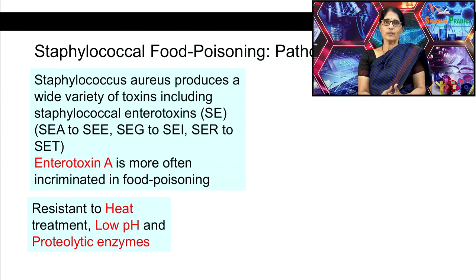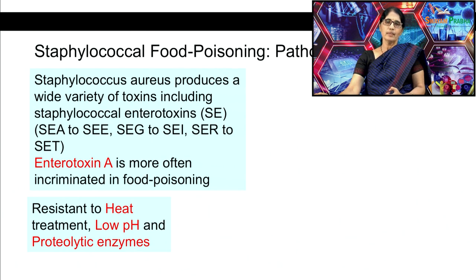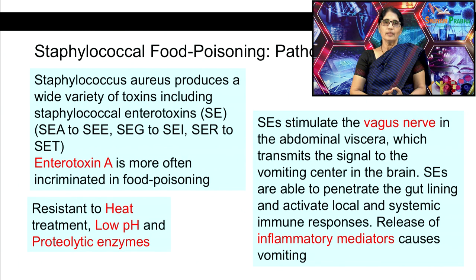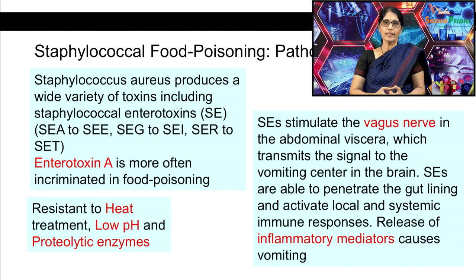Staphylococcus enterotoxin A is resistant to heat — not affected by boiling at 100°C — and remains active at low pH and is not affected by proteolytic enzymes. This enterotoxin is produced during the logarithmic phase of multiplication. Mechanistically, it stimulates the vagus nerve in the abdominal viscera, transmitting a signal to the vomiting center in the brain. It also penetrates the gut lining, activates local and systemic immune responses, and causes local secretion of inflammatory mediators, resulting in vomiting.